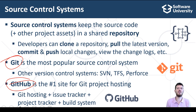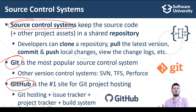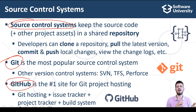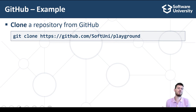At SoftUni, we teach the concepts of source control systems and how to use Git and GitHub early in our end-to-end educational program for software developers, to enable students to create a portfolio of practical projects which helps them to start their first developer job. Let's illustrate how we can use Git and GitHub through a few examples. We shall clone a GitHub repository, edit a local file, commit the local changes and push them to GitHub.